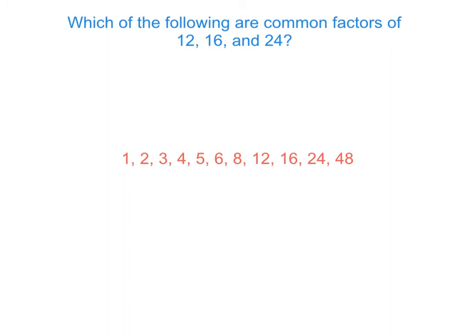Now it says which of the following are common factors of 12, 16, and 24. Factors are numbers that are smaller than the numbers — they're the numbers that fit inside. So I'm just kind of reversing the process. Can 1 go into 12? Yes, obviously it can. Can 1 go into 16? Yes. And 1 can obviously go into 24, so that's correct. Can 2 go into 12? Yes, because it's even. It can also go into 16 and 24 — they're also even. So 2 is correct.